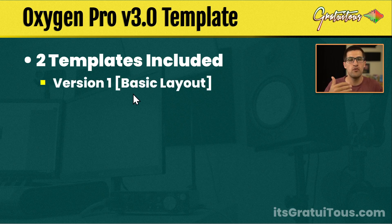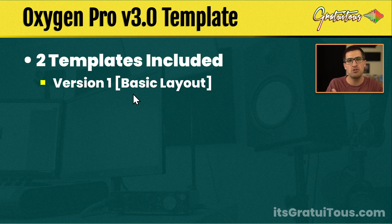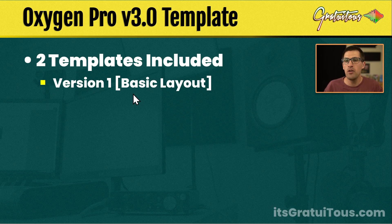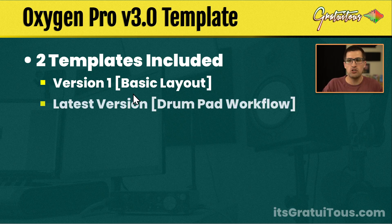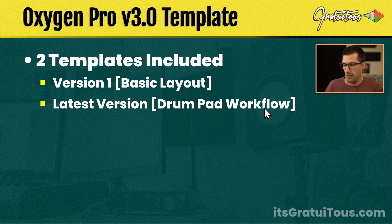One is version 1. So if you like to use the drum pads for your drums, your claps, all that stuff, this is just version 1. It just gets the Oxygen Pro up and running, nice and simple. Then over time, I started to release what I call the latest version, and it is the drum pad workflow.